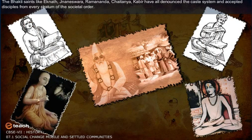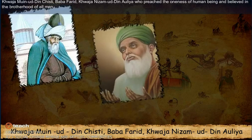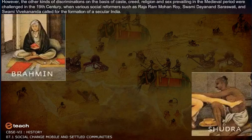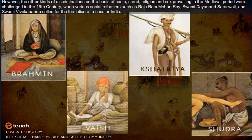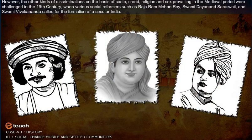Bhakti saints such as Eknath, Jnaneshwara, Ramananda, Chaitanya, and Kabir denounced the caste system and accepted disciples from every stratum of society. Sufi saints like Khwaja Muinuddin Chishti, Baba Farid, and Khwaja Nizamuddin Auliya preached the oneness of human beings and brotherhood. However, discriminations based on caste, creed, religion, and sex that prevailed in the medieval period were further challenged in the 19th century by social reformers such as Raja Ram Mohan Roy, Swami Dayanand Saraswati, and Swami Vivekananda, who called for the formation of a secular India.